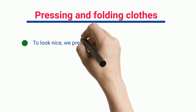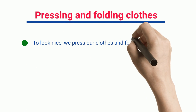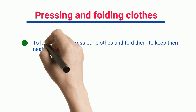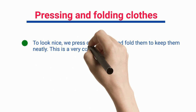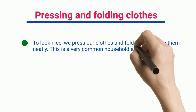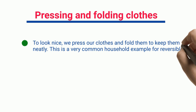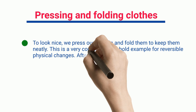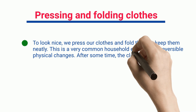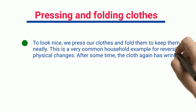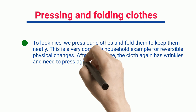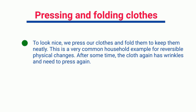Pressing and folding clothes: to look nice, we press our clothes and fold them to keep them neat. This is a very common household example of reversible physical change — after some time the cloth gets wrinkles again and needs to be pressed.